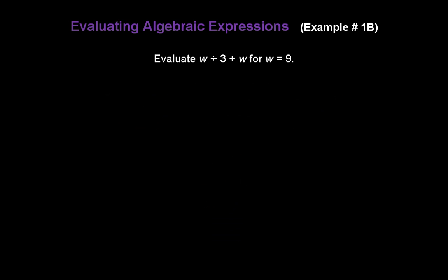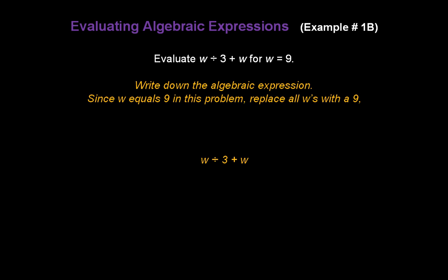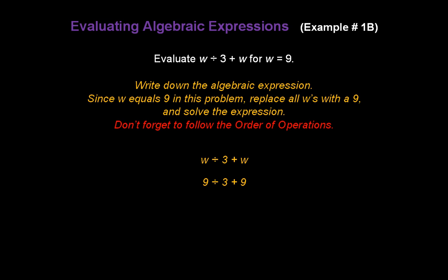Let's evaluate w divided by 3 plus w for w equal to 9. Write down the algebraic expression: w divided by 3 plus w. Since w equals 9, replace both w's with 9, giving us 9 divided by 3 plus 9. Don't forget the order of operations — we have division and addition, so division comes first. 9 divided by 3 is 3, so we rewrite the expression as 3 plus 9, and our final answer is 12.